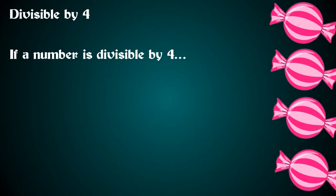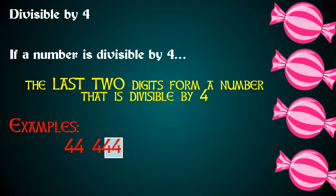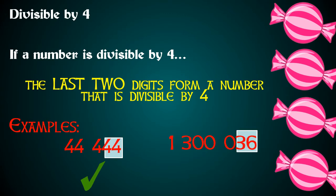What about numbers that are divisible by 4? If a number is divisible by 4, the last two digits form a number that is divisible by 4. For example, in 44,444, the digits 44 are divisible by 4, so 44,444 is also divisible by 4. In the number 1,300,036, the digits 36 are divisible by 4, so that makes 1,300,036 also divisible by 4.